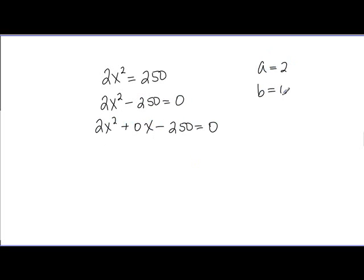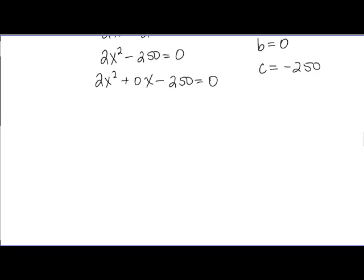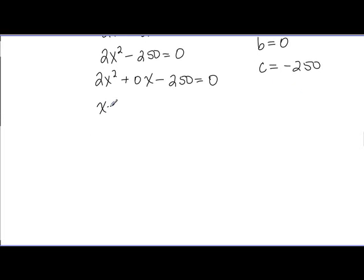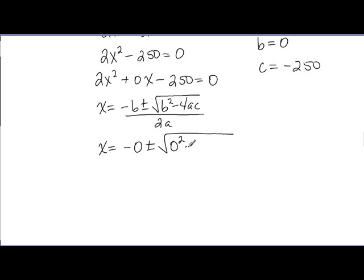Then using the formula, and it's always a good idea to write it down first before you start plugging in numbers, negative b plus or minus square root b squared minus 4ac all divided by 2a. Plugging in the numbers, we'll have the negative of 0 plus or minus square root of 0 squared minus 4 times 2 times negative 250 divided by 2 times 2. Simplifying that, we'll have plus or minus square root of 2,000 over 4.